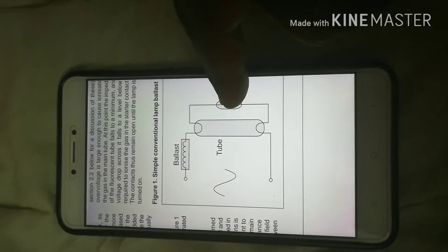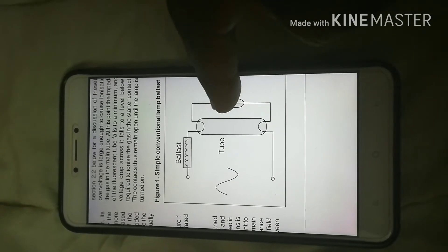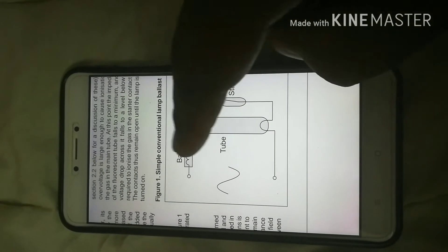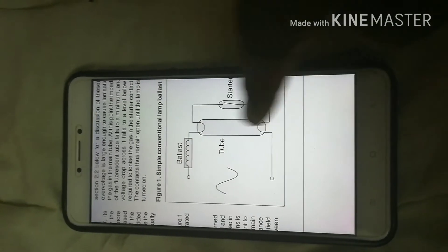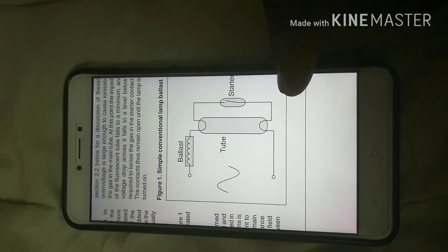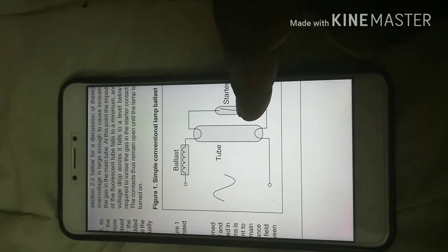Once it starts conducting, you need to close this starter circuit. The starter circuit which is closed, you need to open this one up so that current flows through here instead of flowing through here. So this is the circuit which is normally used.